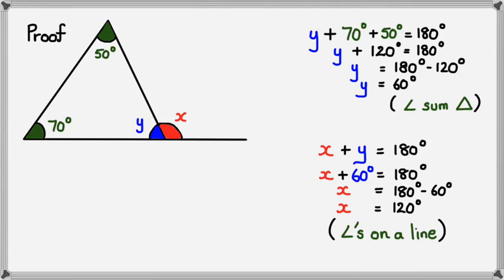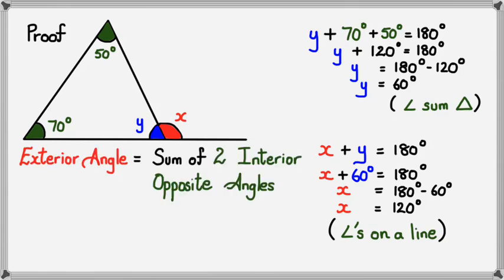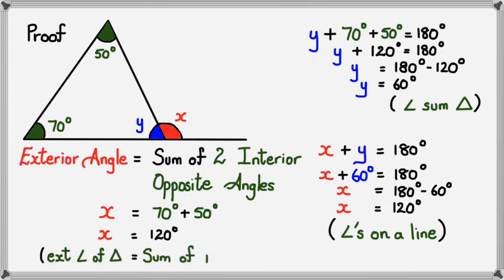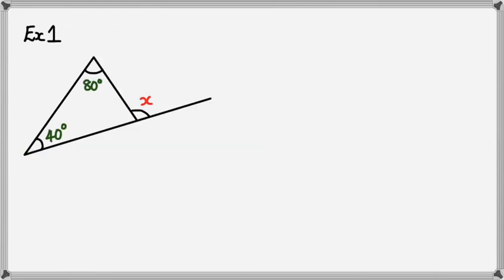As you can see, figuring out X that way requires a lot of work. This is where we see how the exterior angle is just the sum of the interior opposite angles — X equals 70 plus 50, it's as straightforward as that. X equals 120 degrees. Both approaches give the same answer, but this way you do it in two lines. Don't forget to write your reasoning: exterior angle of a triangle equals sum of interior opposite angles.